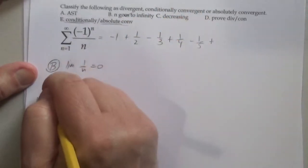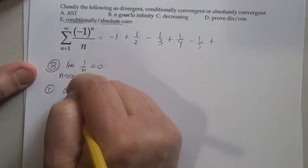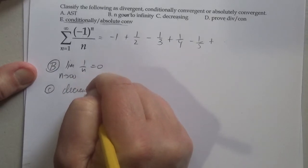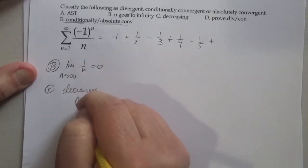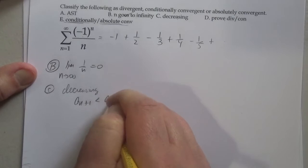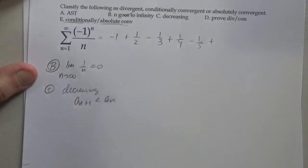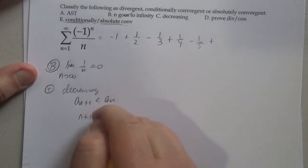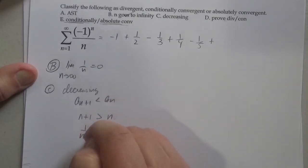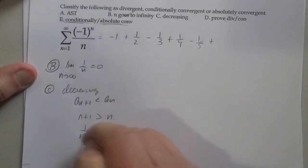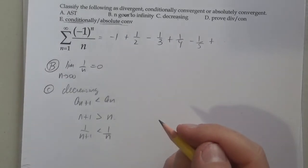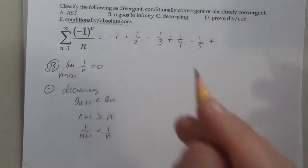Letter C is decreasing. That's just asking: is a sub n plus 1 less than a sub n? Hopefully we're all okay with the fact that n plus 1 is bigger than n. If I take the reciprocal of both sides, I get this. That's a really easy way of showing that something is decreasing. So yes, it's decreasing.